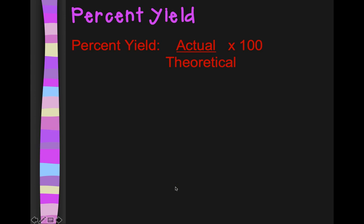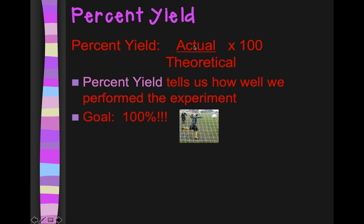The definition of percent yield is the actual value that you got in lab divided by the theoretical value that you got, maybe by doing a hypothesis or by doing a calculation. And then these will be in the same units, like grams or milliliters. So those will cancel. So then you times it by 100 and that puts it into percent, percent yield. When you calculate percent yield, it's telling you how well you did. A perfect lab would mean that your actual was the same as theoretical. They would divide out to one, and then one times 100 would be 100%. So the goal is 100%.